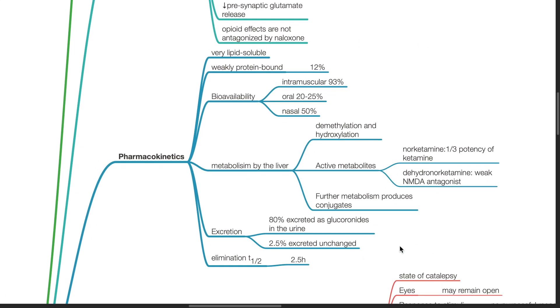Pharmacokinetics. Ketamine is very lipid soluble and weakly protein bound at 12%. Bioavailability for intramuscular injections of ketamine is 93%. Oral bioavailability is 20-25%. Nasal bioavailability is 50%. Ketamine is metabolized by the liver via demethylation and hydroxylation.